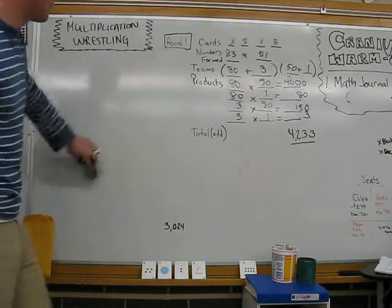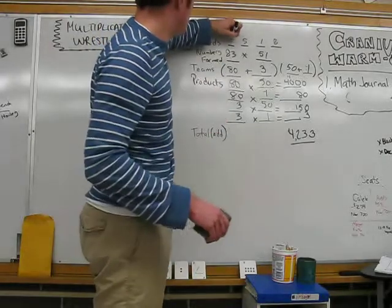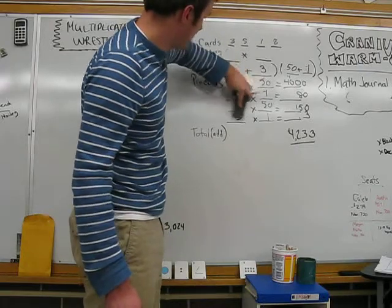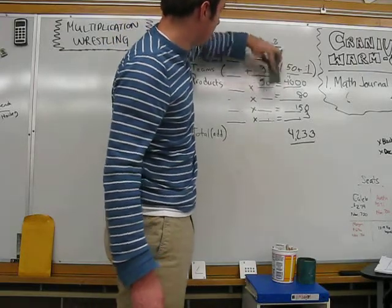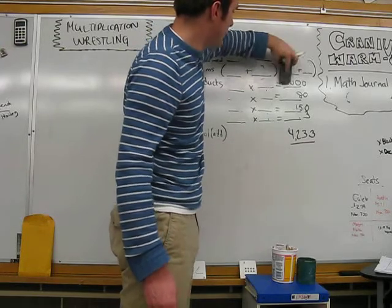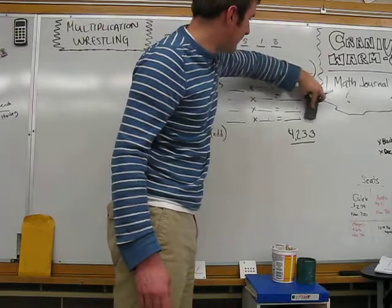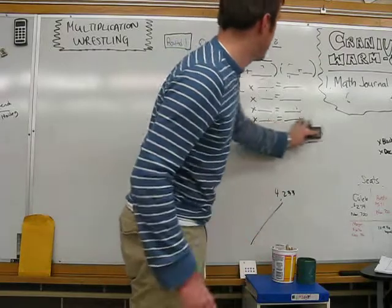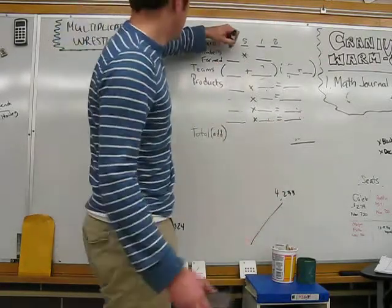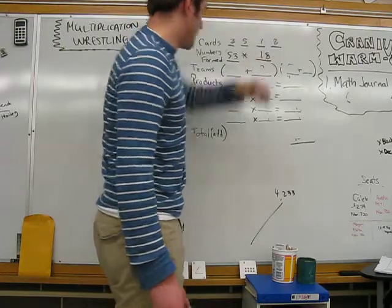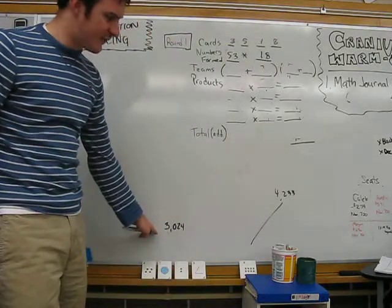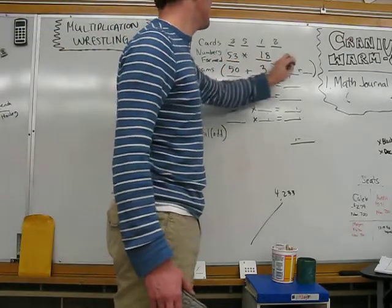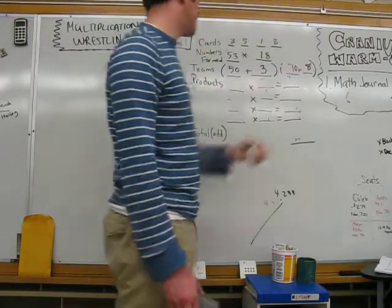Now let's talk a little strategy. 83 and 51 are pretty big numbers. Now, if we get rather careless, let's take a look at the difference between 4,233 and the other product that we come up with. I'm going to put 4,233 down here. Remember that those are our cards right there. Now I'm going to make the numbers 53 and 18. Player 1 had this. I want to beat this. 53 and 18, so 50, 3, 10, and 8. Now let's wrestle them.